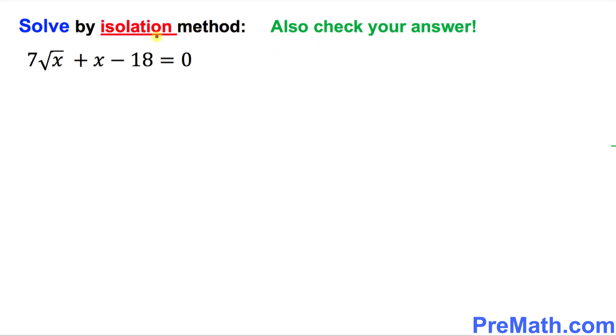In this isolation method, our approach is to make sure that this radical term must be isolated. We're going to put it on one side, so that means these two terms must go on the other side. So that is going to give us simply 7 square root of x equals to, when you move this negative 18 on the other side, become positive 18, and this positive x become negative x.